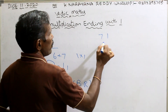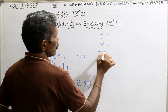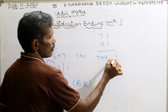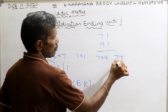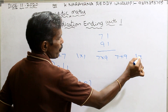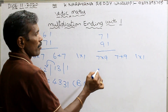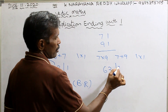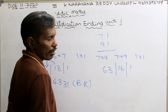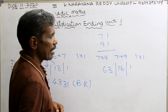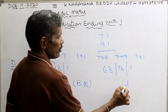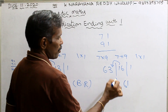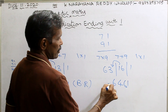71 into 91: multiplication 7 into 9 is 63, next addition 7 plus 9 is 16, next 1 into 1. Balancing rule: 1, then 6, 1 plus 3 is 4, 6. That is all — answer is 6461.